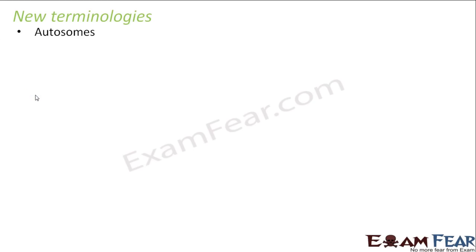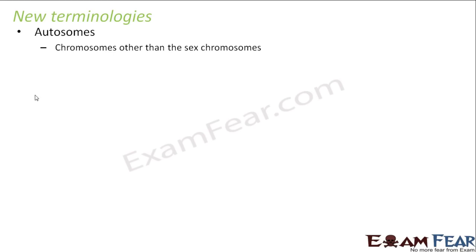Let us start with autosomes. Inside the human body, there are two types of chromosomes present inside a cell: one is the sex chromosome and the other is autosomes.